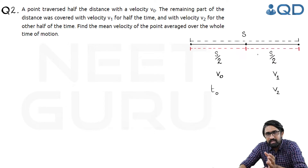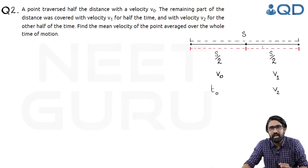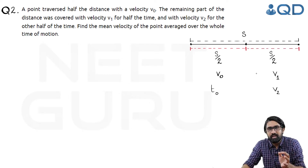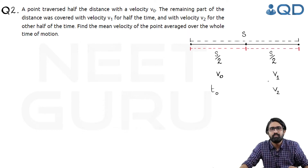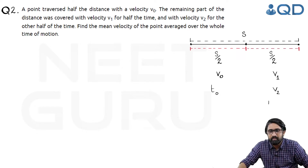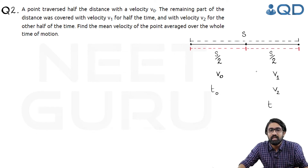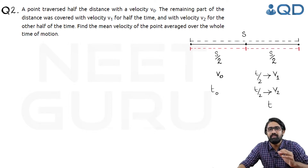The remaining half distance, the remaining s/2, was covered in two halves of time. In the first half of time, the particle travelled with velocity v1, and in the remaining half of time, the particle travelled with velocity v2. So if that entire second half of distance was covered in time t, then for t/2 the particle travelled with velocity v1, and for the remaining t/2 the particle travelled with velocity v2.